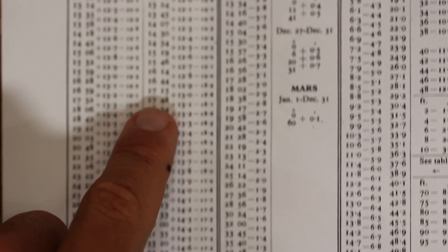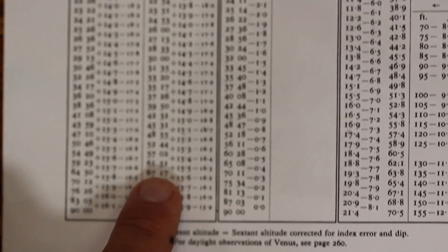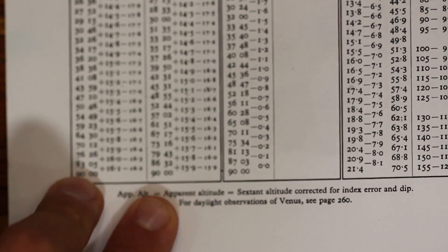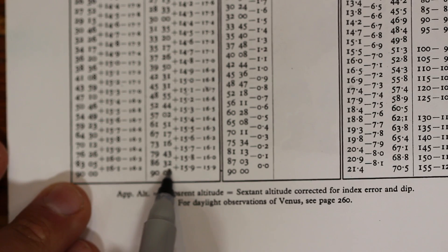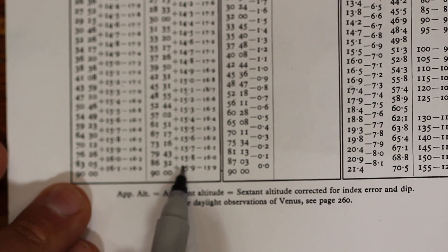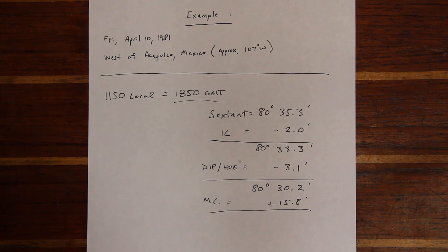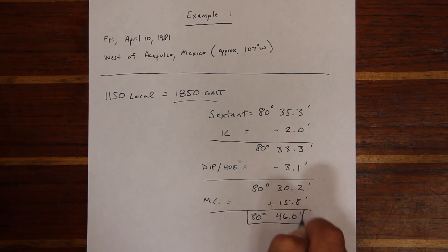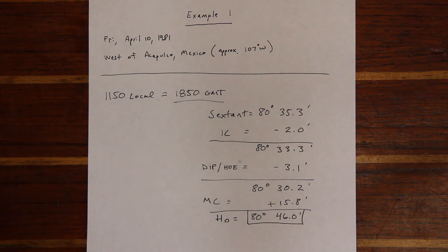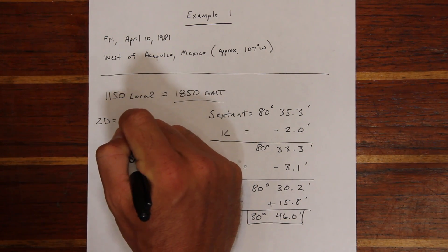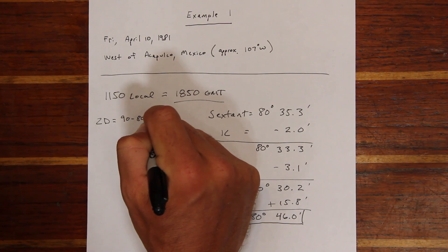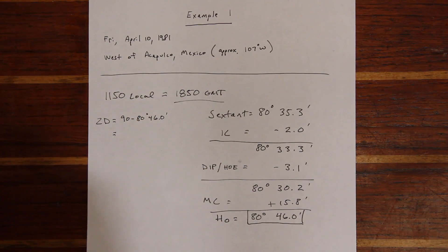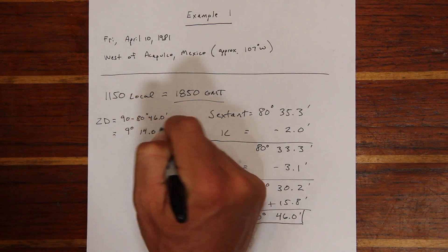We look under our appropriate month and the limb that we shot, and come up with a main correction of plus 15.8 degrees. Once we apply that to the figure, we have our observed altitude. From then on, it's the same procedure we learned last week for calculating latitude at local apparent noon. The first step is to determine our zenith distance, so we take the sextant reading and subtract it from 90 degrees to come up with our zenith distance of 9 degrees 14.0 minutes.